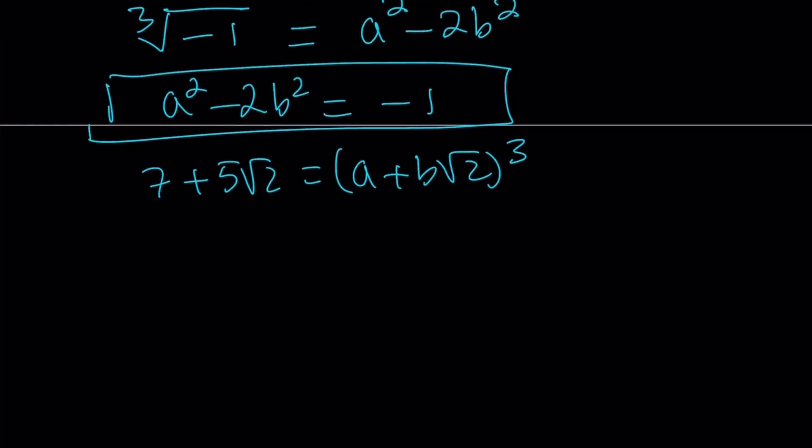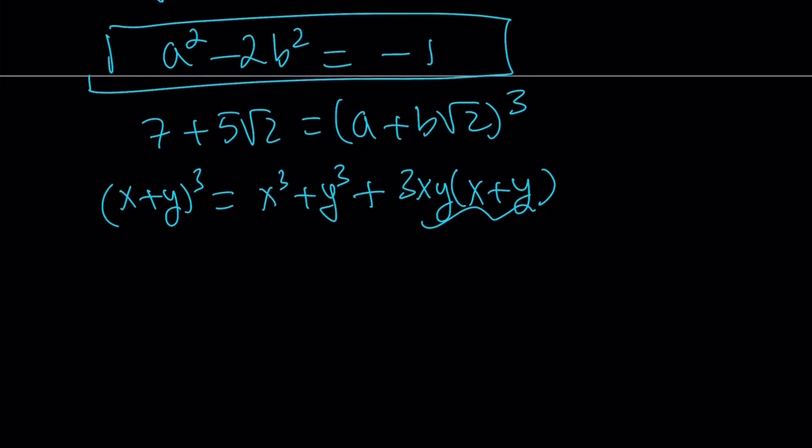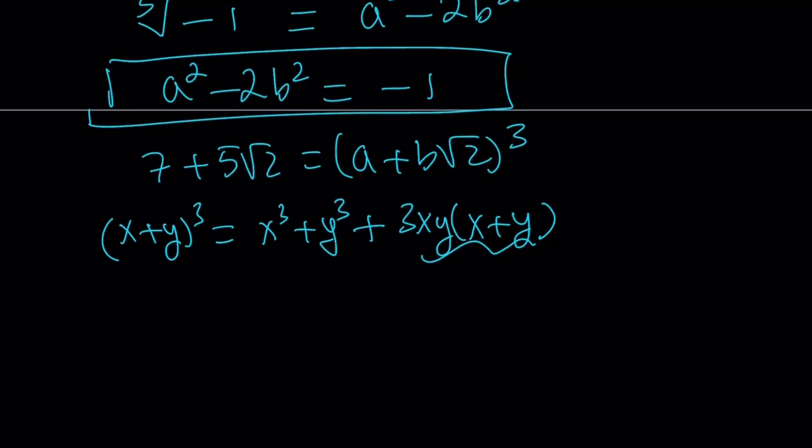So let's go ahead and cube what's on the right hand side. I usually use this identity, it's kind of more organized: x cubed plus y cubed plus 3xy times x plus y. You can use this identity in many different ways and that's where Cardano's formula starts. So from here I can basically cube the right hand side using the formula.